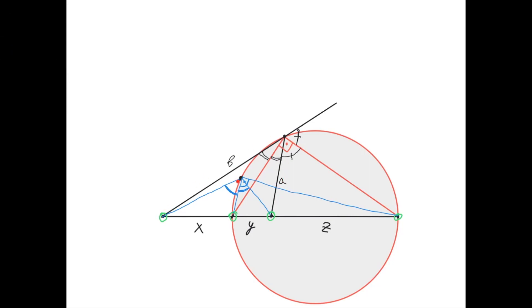It doesn't matter if we choose the point here, or here, or here — it would always be true that the ratio of the distance from this point to the point on the circle, divided by the distance from the point on the circle to this point, would always equal B divided by A. So the locus of all points such that this ratio is constant is exactly the Apollonian circle.